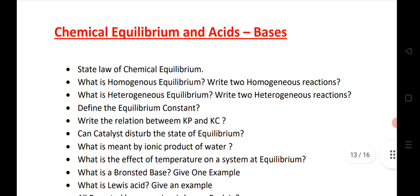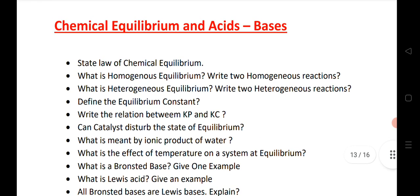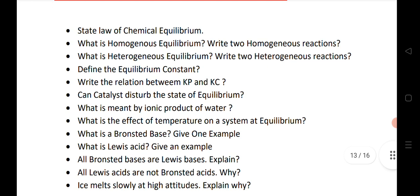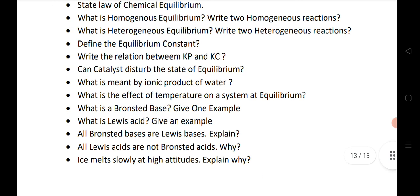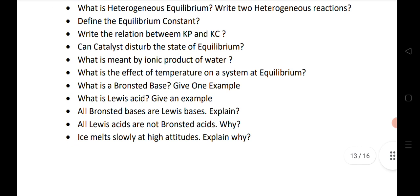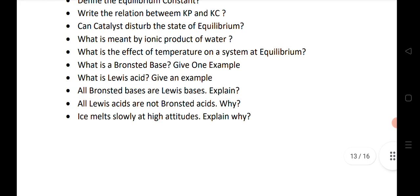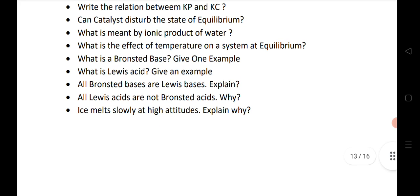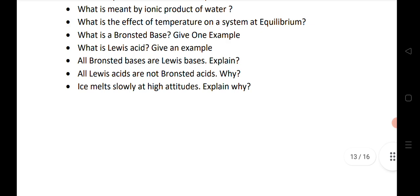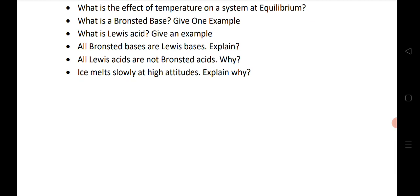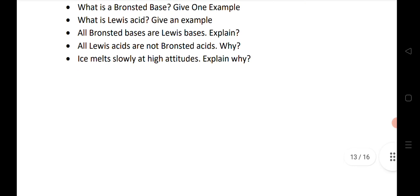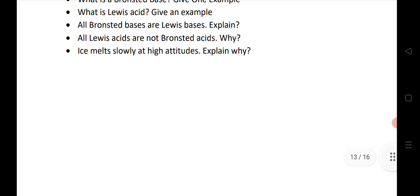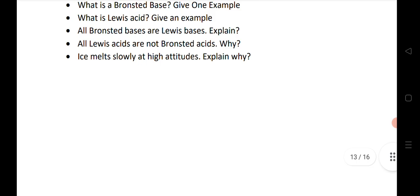Next is chemical equilibrium. Again, important chapter. State law of equilibrium, homogeneous equilibrium, heterogeneous equilibrium, equilibrium constant Kp and Kc. Catalyst disturbs the state of equilibrium. Ionic product, very important question. Effect of temperature on system. Bronsted base, give one example. Lewis acid. All Bronsted bases are Lewis acids. All Lewis acids are not Bronsted acids, why? Ice melts slowly at high altitude. This is also very important question.